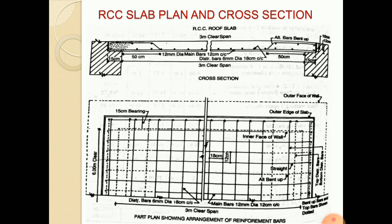If you notice, the clear span in X direction is 3 meter. Then, bearing on each wall is 15 centimeter. So, the total length of the slab will be 3.3 meter. In other direction, it is similarly 6 meter.